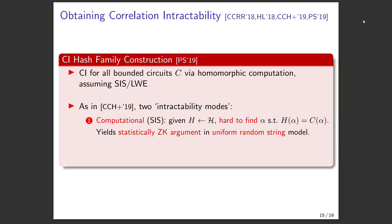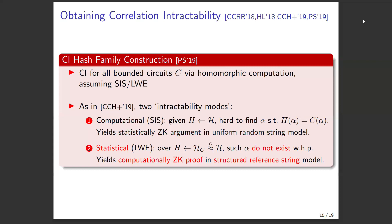There are two different modes: one based on SIS, where it's hard to find a correlation, giving an argument — sound against computationally bounded provers, statistically zero knowledge under a random string. Or you can flip it and get a version where no alpha breaking correlation intractability even exists, so even an unbounded prover can't find it. This gives a computationally zero knowledge proof if you have a structured random string that is an LWE matrix.